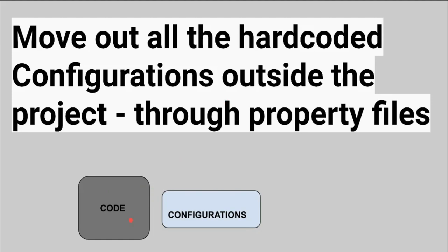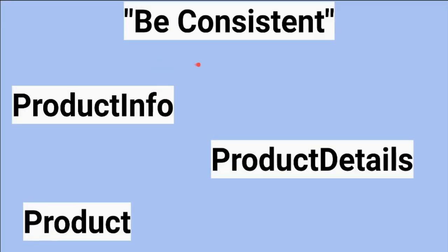One more important point: move all hard-coded configurations outside the project. If there are hard-coded things or configurations in your code, please move them to a configuration file. All hard-coded strings should be moved out so that whenever there is a change in configuration, I don't have to change the code — I just change the property file. This is one of the key benefits.